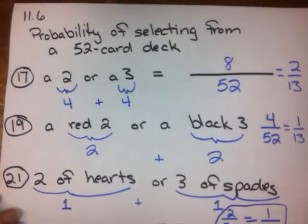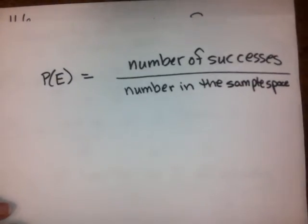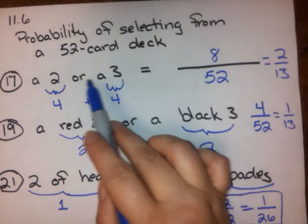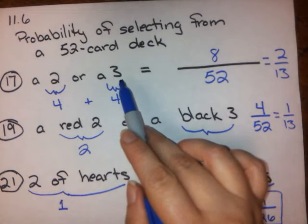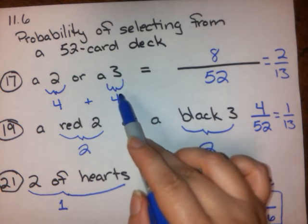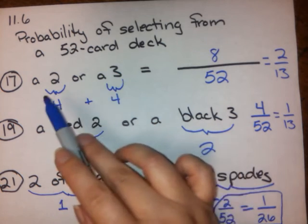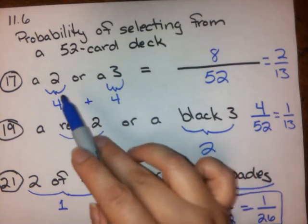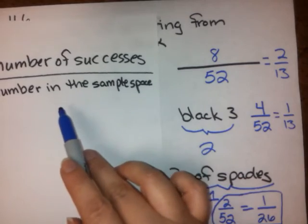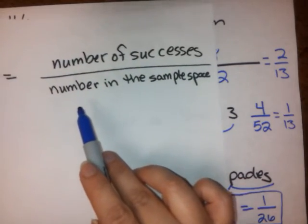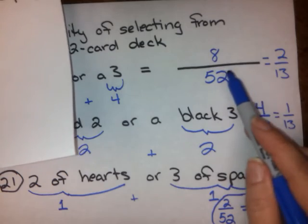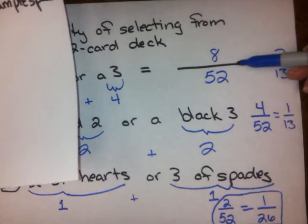So basically, what you need to remember here is that you're looking at the number of things that count as successes. In this case, we were saying that drawing a 2 or drawing a 3 would be a success. So how many ways are there to draw a 2? Four. How many ways to draw a 3? Four. So 4 plus 4, that's how many successes we have in that deck of cards. So 4 plus 4 is 8, 8 goes on top. How many are in the sample space? That's the entire deck of cards, all 52 cards. So you get 8 over 52.